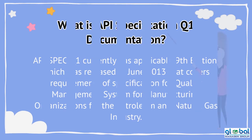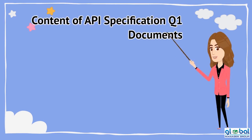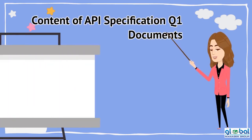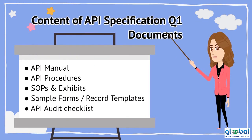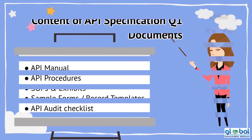This is the API Specification Q1 Requirements Documentation Manual — including Procedures, SOPs and Exhibits, Sample Forms, Record Templates, and an Audit Checklist.